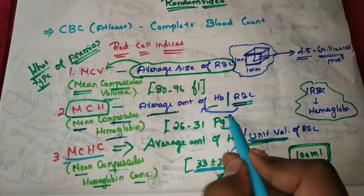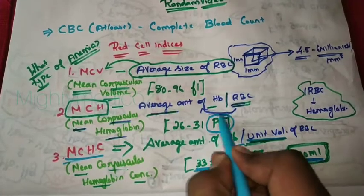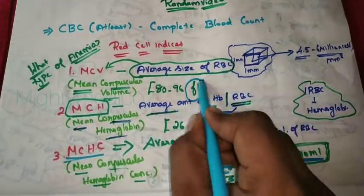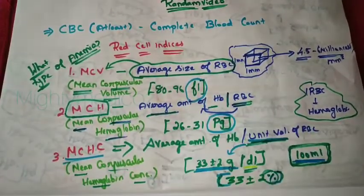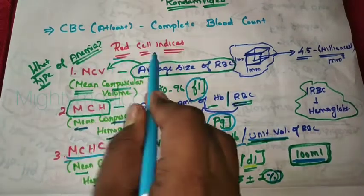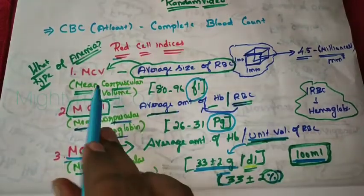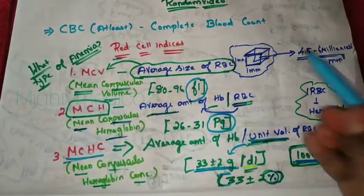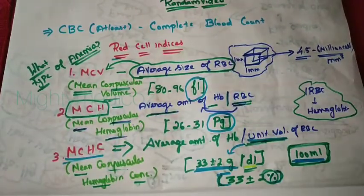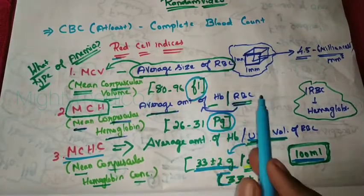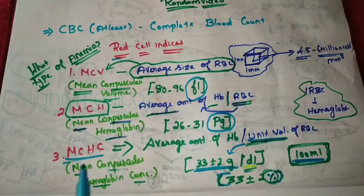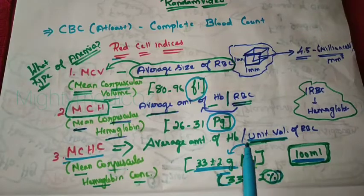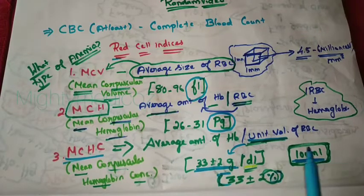To summarize the red cell indices: MCHC is expressed as a percentage, MCH is expressed in picograms, and MCV is expressed in femtoliters. MCV is the average size of a single RBC, MCH is the average amount of hemoglobin per RBC, and MCHC is the average amount of hemoglobin per unit volume of RBC.